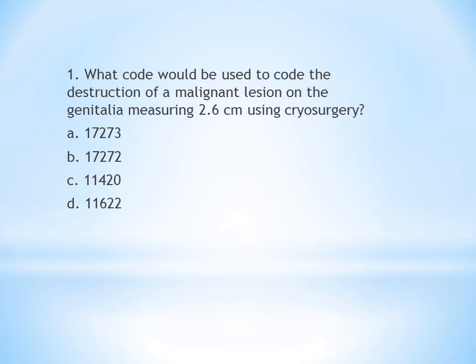Moving on to the questions. The first question is: what code would be used for the destruction of a malignant lesion on the genitalia measuring 2.6 cm using cryosurgery? The options are given. Whenever you get a question on CPT, the first thing to note is what treatment method is done — here the treatment is destruction, and the method of destruction is cryosurgery.